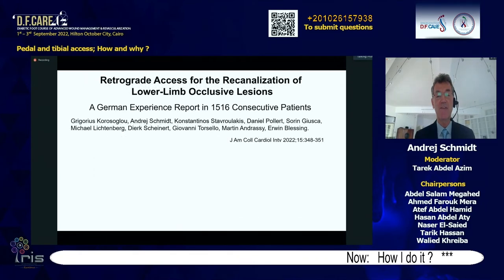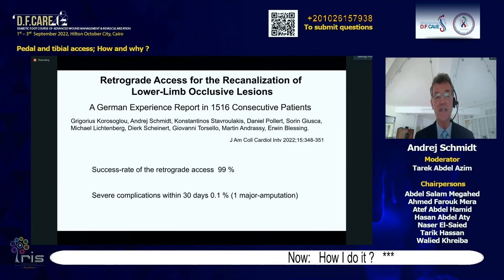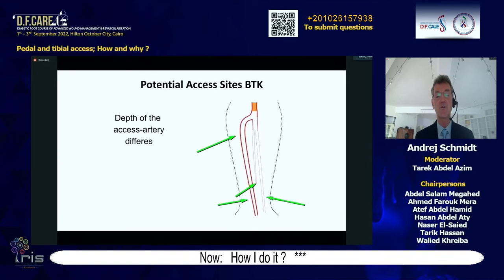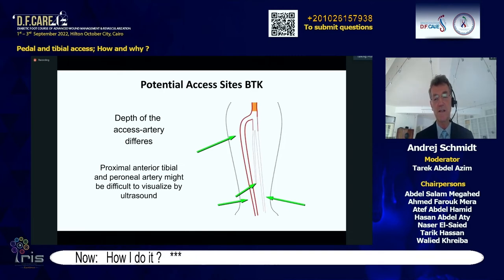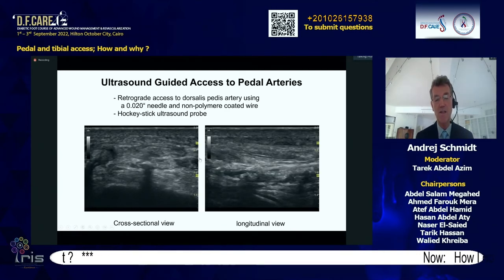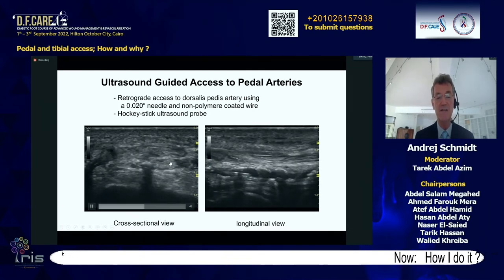A recent analysis of more than 2,500 interventions from German centers also shows 99% retrograde access success with severe complications within 30 days of only 0.1%. We can approach retrograde access at nearly all levels below the knee. Previously done fluoroscopically, now more often with ultrasound. Some arteries are difficult to see with ultrasound — for example, the deep peroneal artery or when there is significant edema. For ultrasound-guided access, we use a hockey-stick probe in cross-section and push the needle onto the artery to confirm central position.